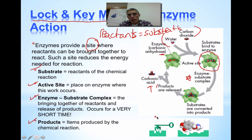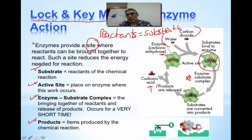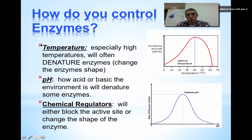We call it the lock and key because enzymes are very specific to the type of reactions they're going to encourage to proceed. The reactants are the only reactants that can fit in that active site — nothing else can get in there. There are lots of different ways that enzymes can be controlled. There are times when enzymes can be affected by temperature, and times they can be affected by pH.